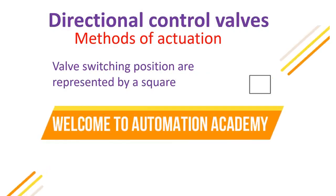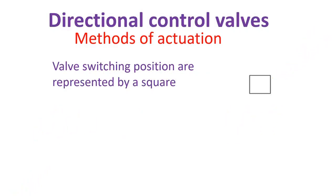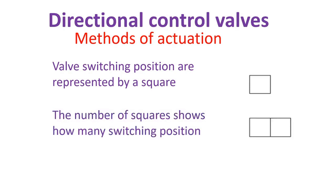Now let's get started on how to read directional control valves. Valve switching positions are represented by a square. The number of squares shows how many switching positions.